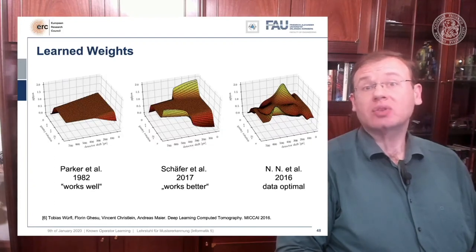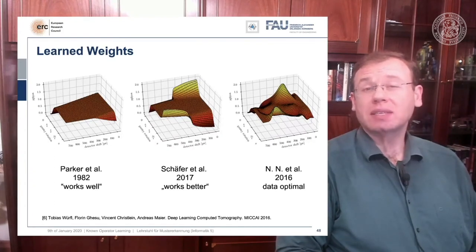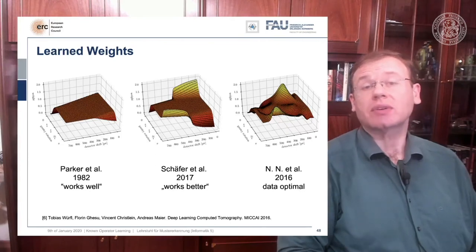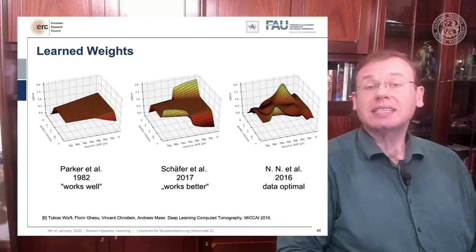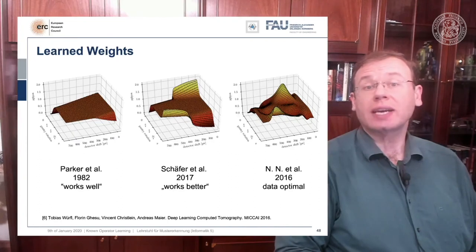Now you could argue, well, you are again using a black box, but that's not actually true because our weights can be mapped back into the original interpretation because we still have a filtered back projection algorithm.